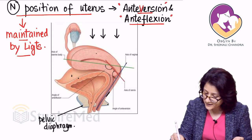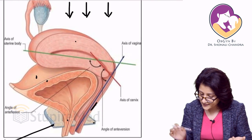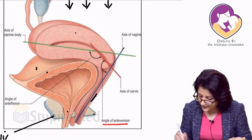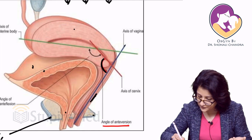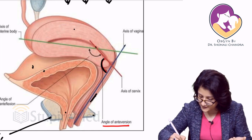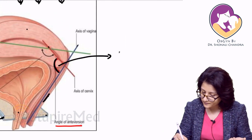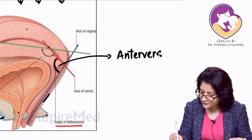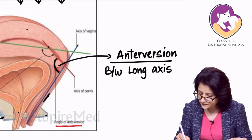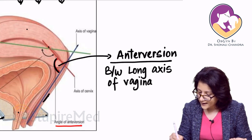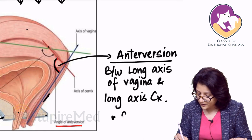To remember: 'version' contains V — so the angle of anteversion is the angle between the long axis of the vagina and the long axis of the cervix. Normally this is about 90 degrees.